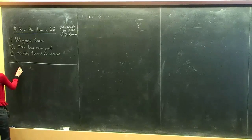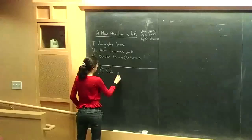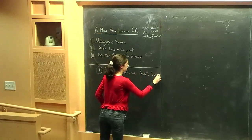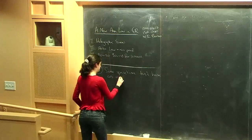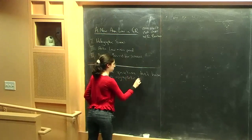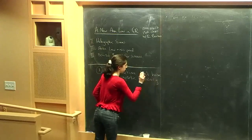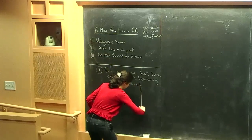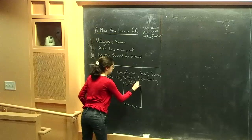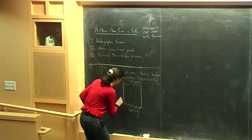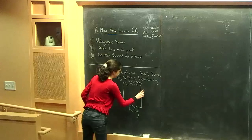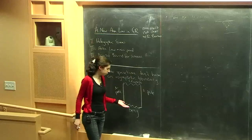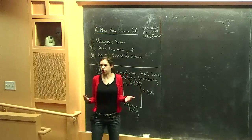Some spacetimes don't have an asymptotic boundary. For example, the closed re-collapsing universe — with a big crunch, big bang, north pole, and south pole — has no asymptotic boundary, so we have no way of defining a causal horizon in this spacetime. How do we talk about the generalized second law? It's not clear.